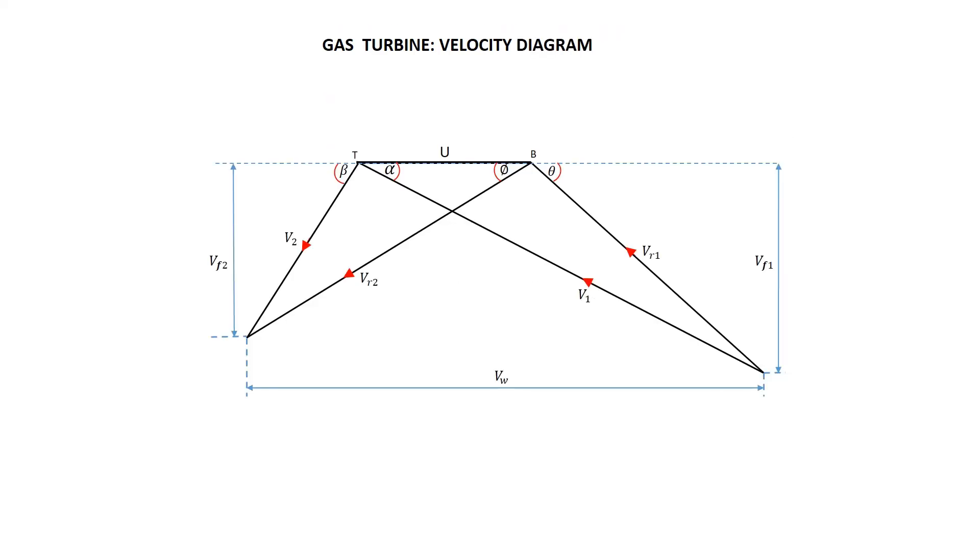The gas turbine has five conditions that are important to note. The conditions will help us complete the diagram, and we need to identify them every time we read a gas turbine question. So let's go through them. Condition one is no end thrust. No end thrust or pressure means that the final velocity of the blade Vf1 equals the final velocity of the turbine Vf2. These are the vertical velocities on either side of the velocity diagram.